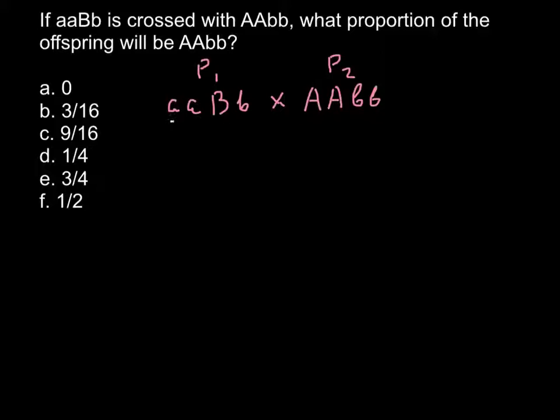First would be when we consider allelic frequencies of the two pairs separately. For example, here would be one pair of the A allele and here would be another pair of the B alleles.